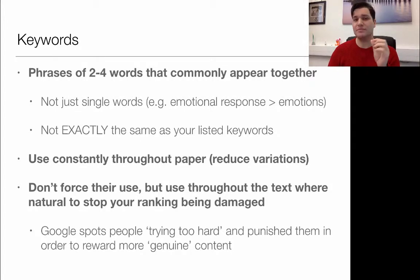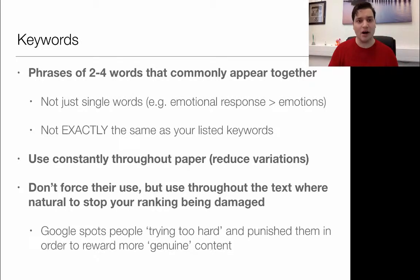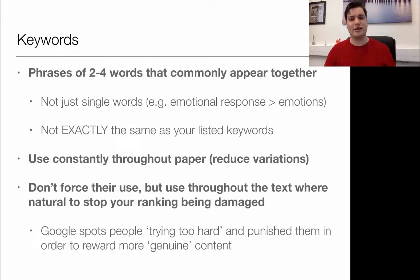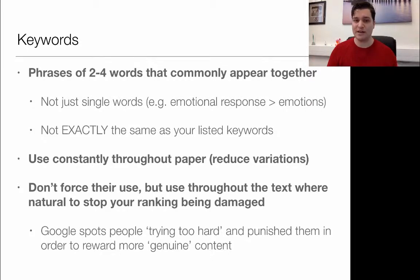You don't have to use keywords religiously throughout the paper — you can use synonyms and variations — but you want to reduce synonyms where possible. Don't force keywords if they really don't work, but if you have the choice between a keyword and an alternative, use the keyword. If it's in there naturally, it'll really help boost relevance. Google will see your work and think 'this is really relevant to emotional response' and rank it higher. If you're cramming keywords in where they don't fit, Google can detect that and penalize your ranking, favouring more naturalistic, relevant content instead.